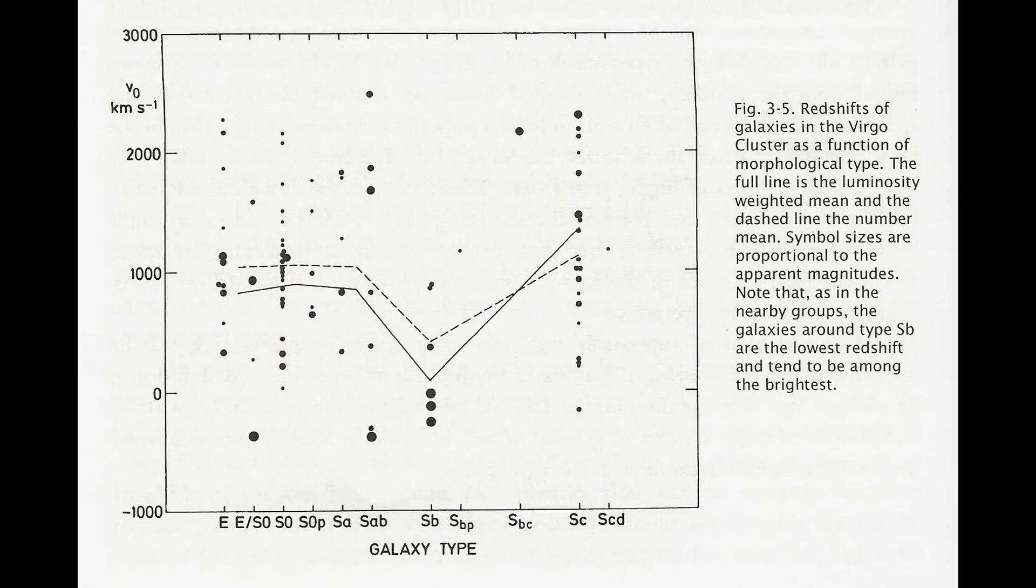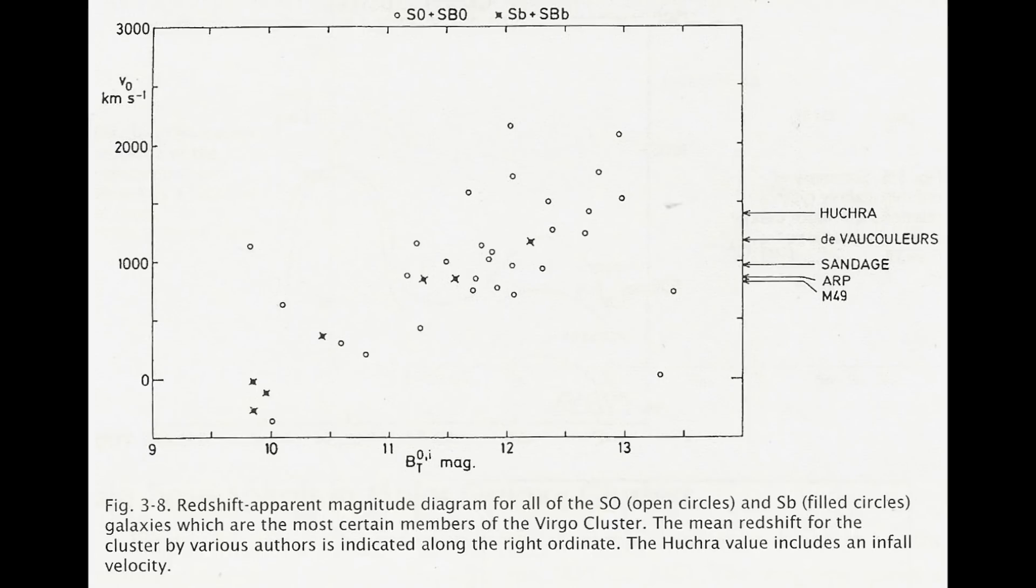It is therefore possible to pick any value for the redshift by simply selecting the desired S0 galaxy and this is exactly what we find. Along the right we see a list of published redshifts for the Virgo cluster and you will see that it varies wildly.